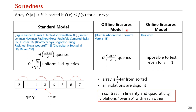On the other hand, for properties like linearity and quadraticity which are testable in our model, whenever a function is far from the property, the violations have a lot of overlap with each other — that is, each point participating in a violation on average participates in many other violations.